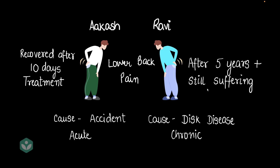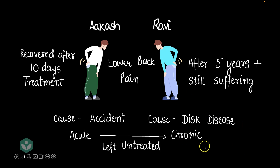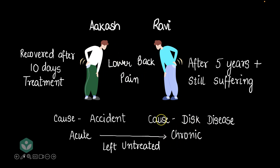Now, can an acute disease ever become a chronic disease? Well, it can. If Akash had left his acute issue untreated, it could turn into a chronic disease. If Akash, after his accident, did not receive the required treatment, his situation would have worsened over time — over months and years — and at some point he may have ended up with some kind of chronic disease. So if you have any acute diseases, don't delay, don't leave them untreated, because once things become chronic, then it's very hard to treat.